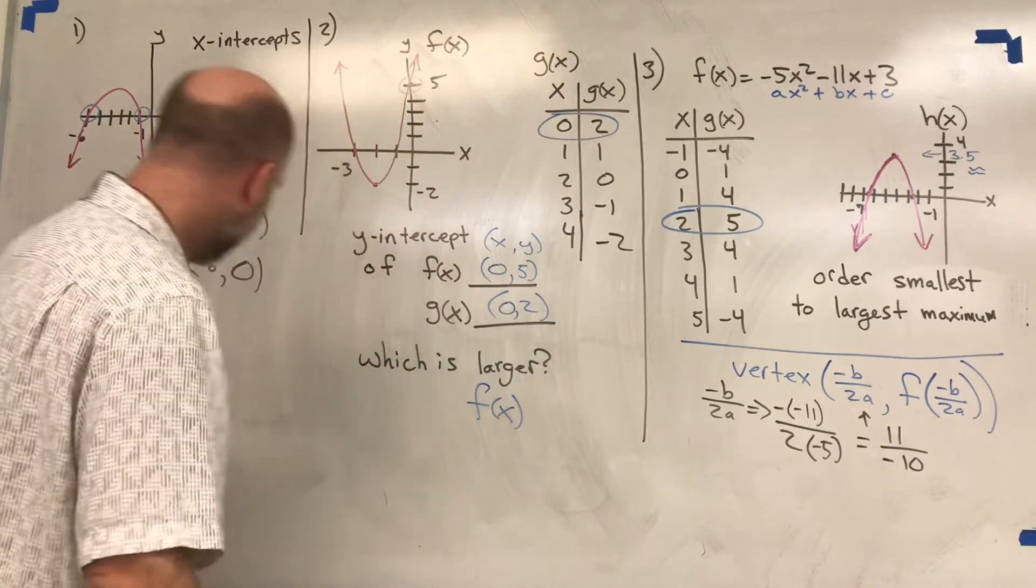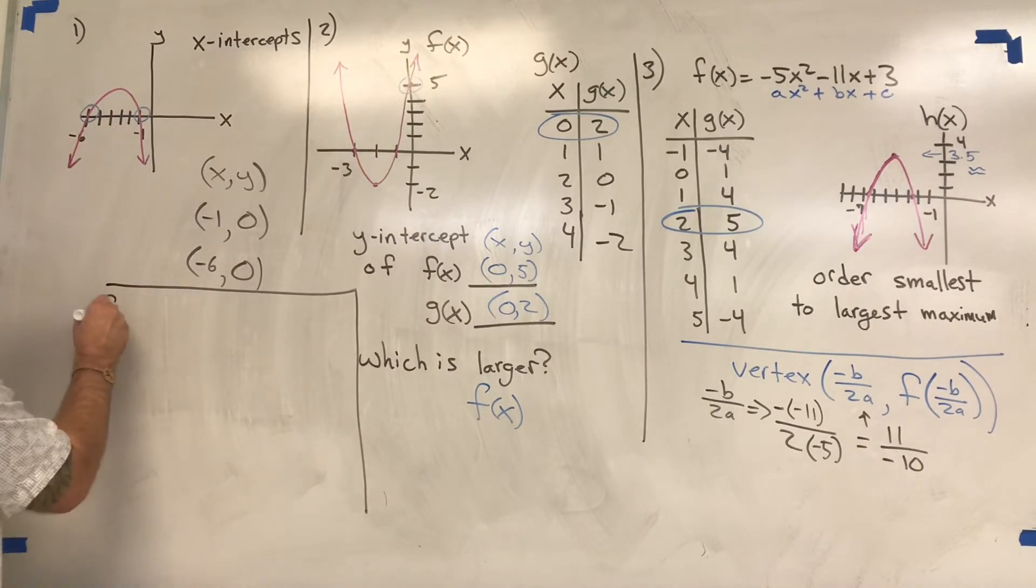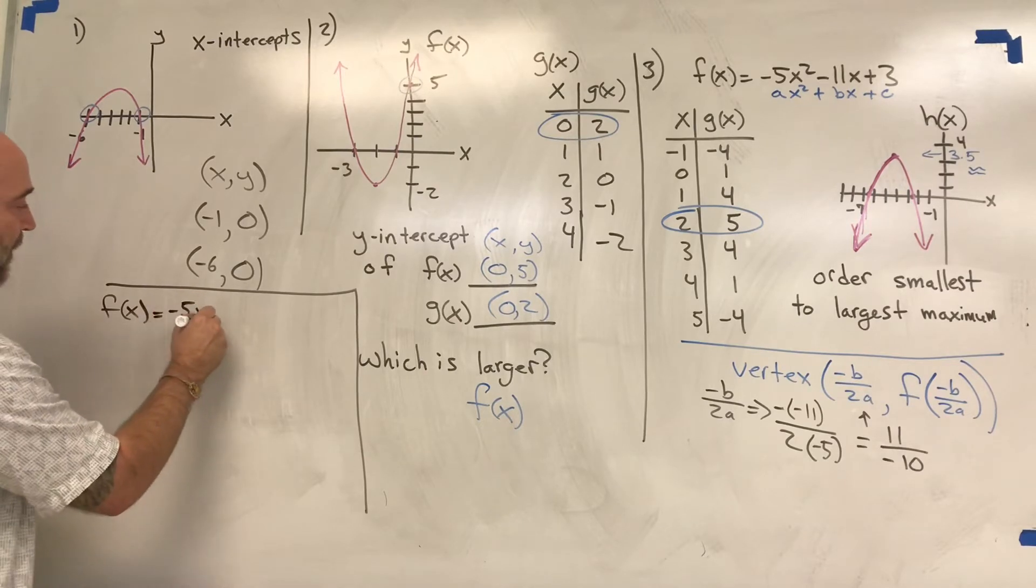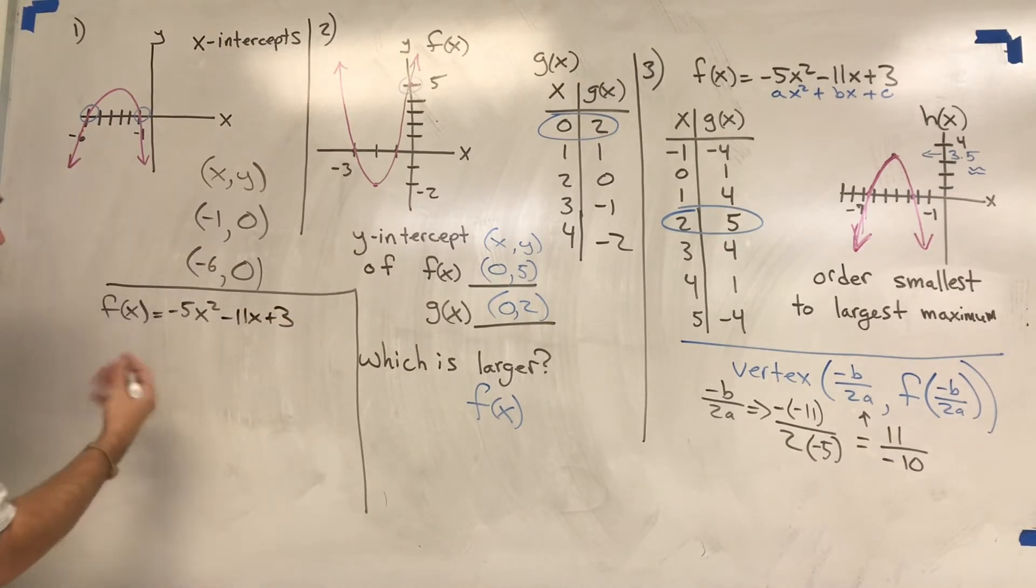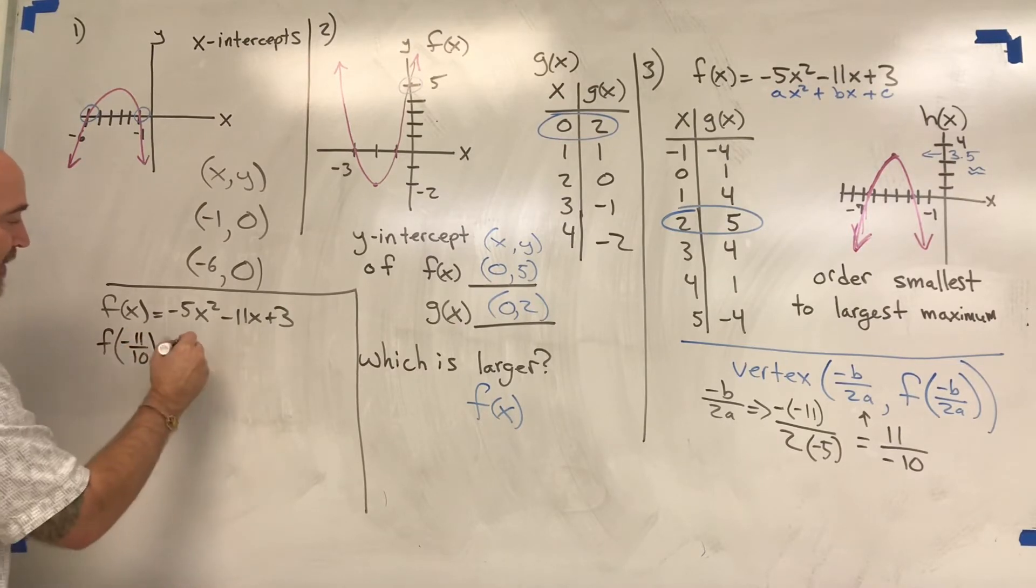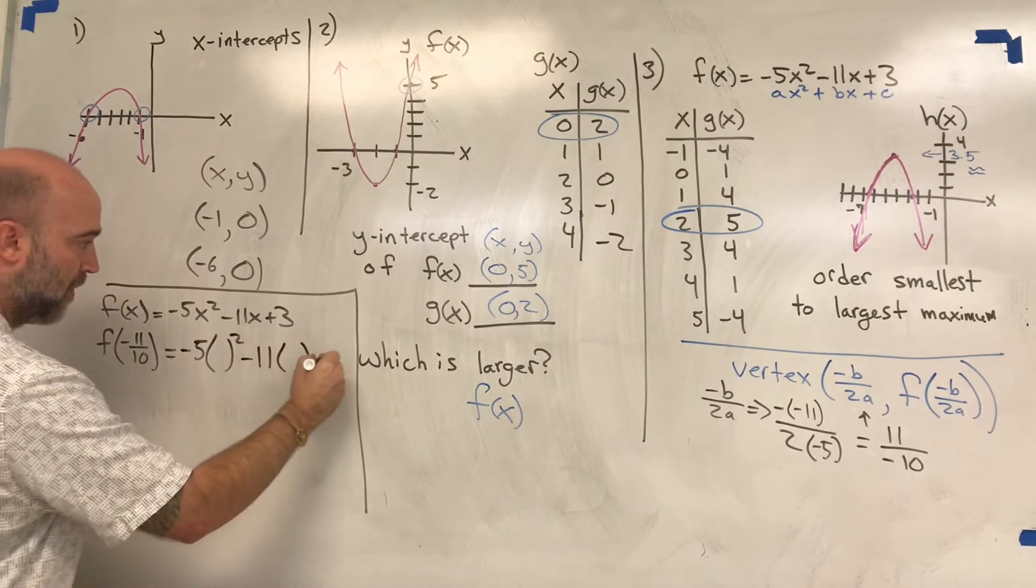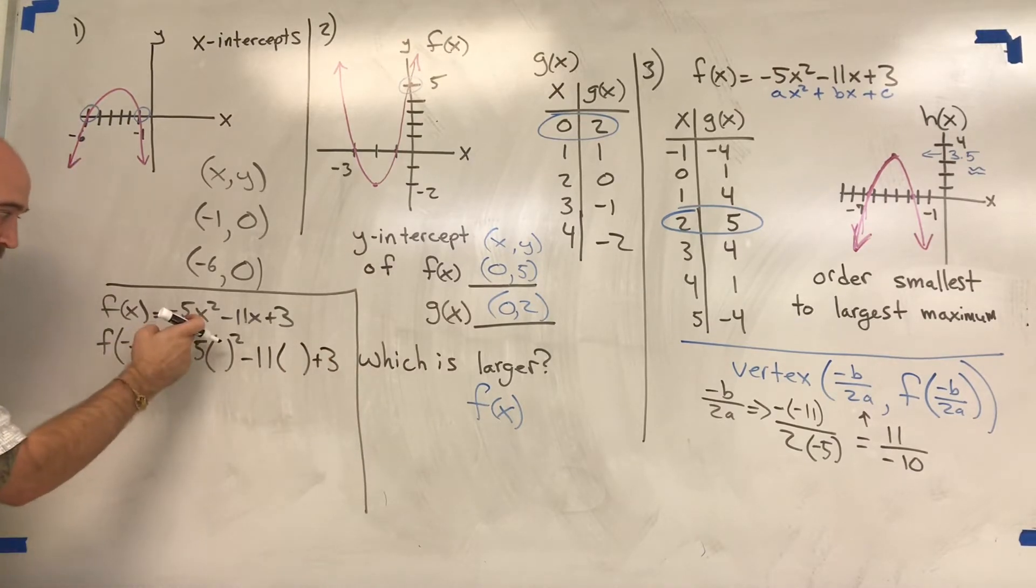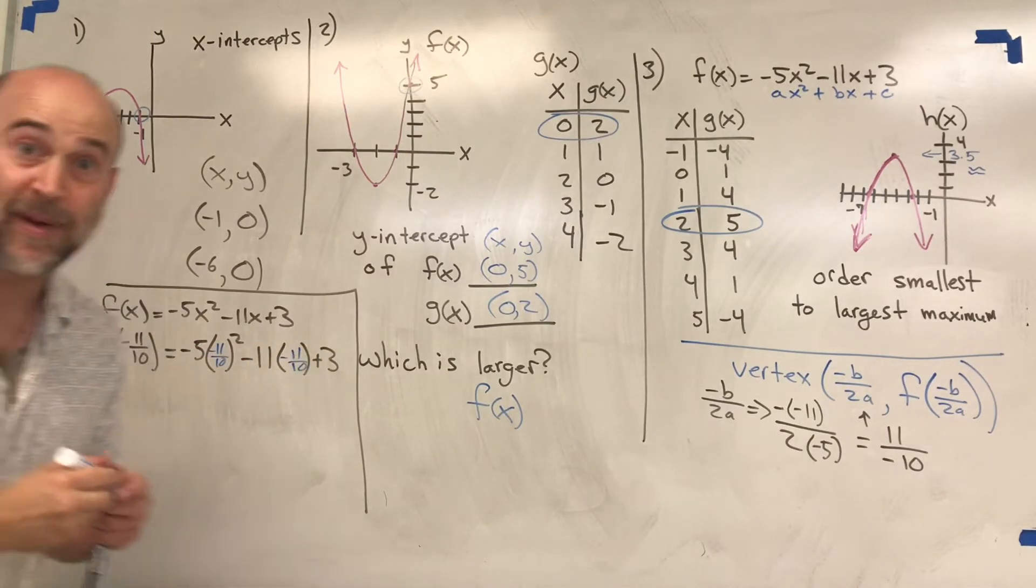Now I need to plug that into the equation. My f(x) is -5x² - 11x + 3, and I'm going to use my trick, which is a skeleton. So that's f of -11/10, which is -5(-11/10)² - 11(-11/10) + 3. Wherever I see an x, I put parentheses, then it's easier to plug in -11/10. I need to grab a calculator real quick.